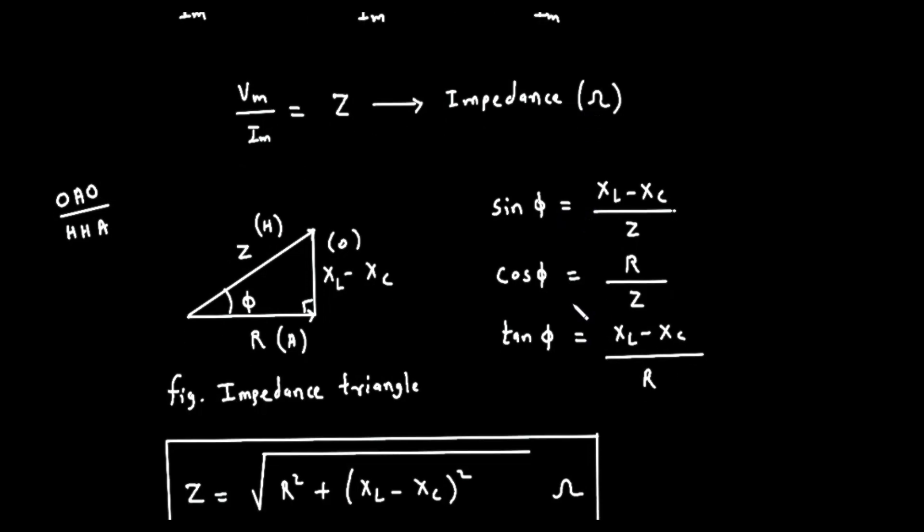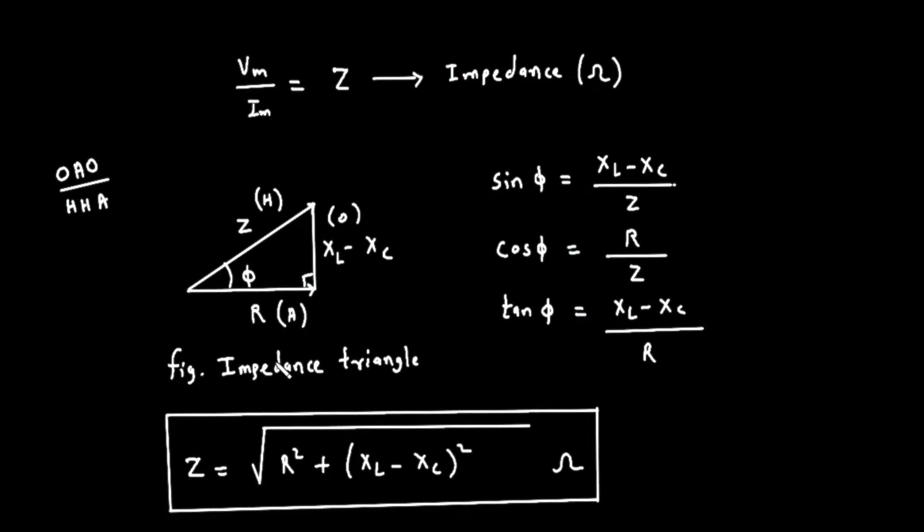By doing this division, we have transformed our voltage triangle into a new, but similar, triangle called the impedance triangle. Its horizontal base is now the resistance, R. Its vertical side is the net reactance, which is X sub L minus X sub C. Its hypotenuse is the total impedance, Z. The angle is still our phase angle, phi.